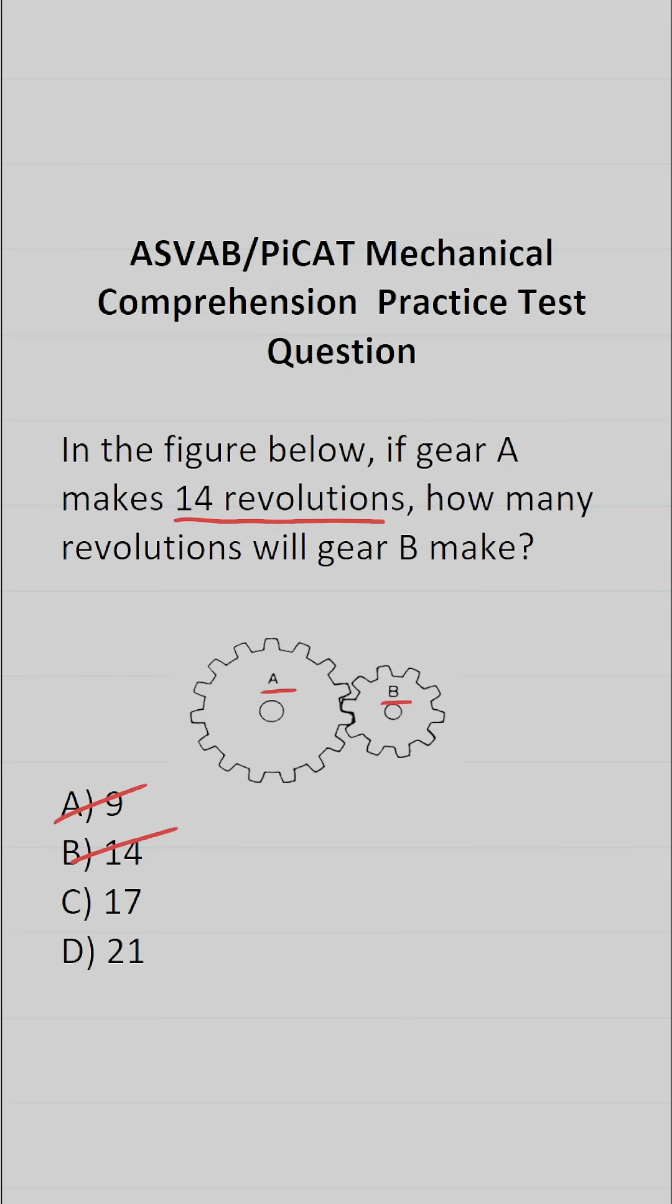To determine exactly how many revolutions gear B is going to make, we first have to count the number of teeth that are on each of these gears. So I'm going to start with gear A. We have 1, 2, 3, 4, 5, 6, 7, 8, 9, 10, 11, 12, 13, 14, 15 teeth.